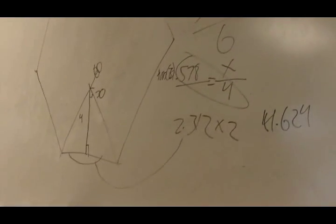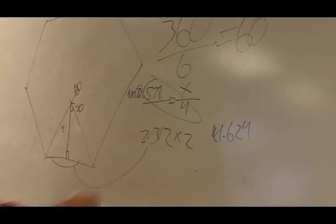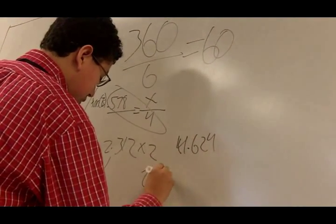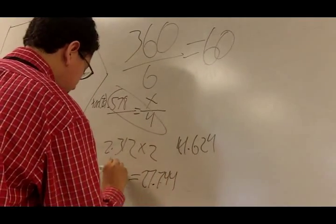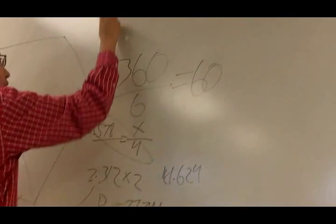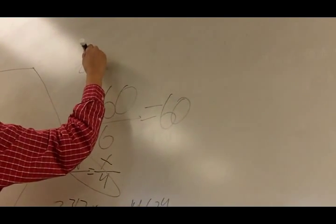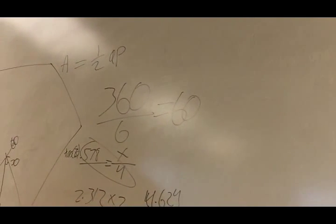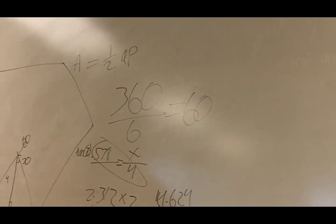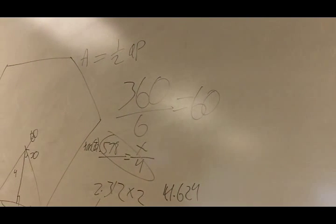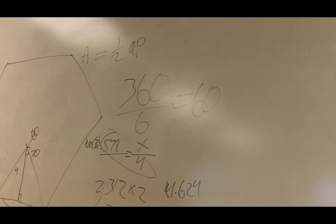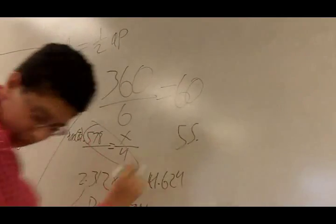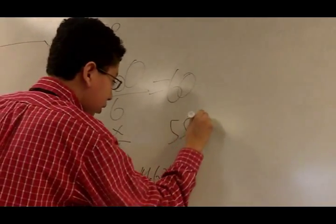Then we would multiply that by 6 which would equal 27.744 which would be the perimeter. It says half the apothem times the perimeter equals area. So we would multiply the apothem by the perimeter and then divide it by 2 which would equal 55.488.